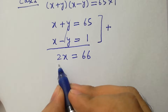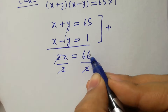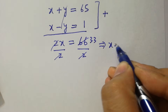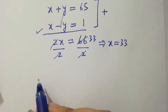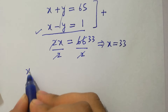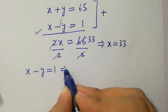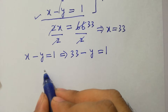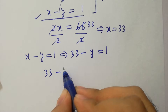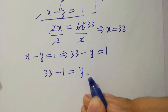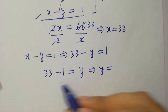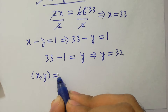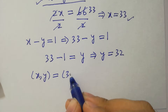By comparing, x plus y equals 65 and x minus y equals 1. Add them: y cancels, x plus x is 2x, equal to 65 plus 1 is 66. Divide both sides by 2, so x equals 33. Substituting into x minus y equals 1: 33 minus y equals 1, so y equals 33 minus 1 equals 32. The values of x and y are 33 and 32.